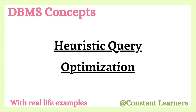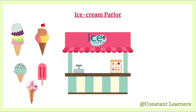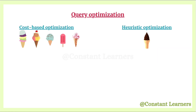Whenever my sister and I visit an ice cream parlor, she tastes all different flavors before deciding which one to buy, considering factors such as sweetness, creaminess, and price. However, I know exactly which flavor I take — chocolate is always the best kind. That is the difference between cost-based optimization and heuristic optimization.